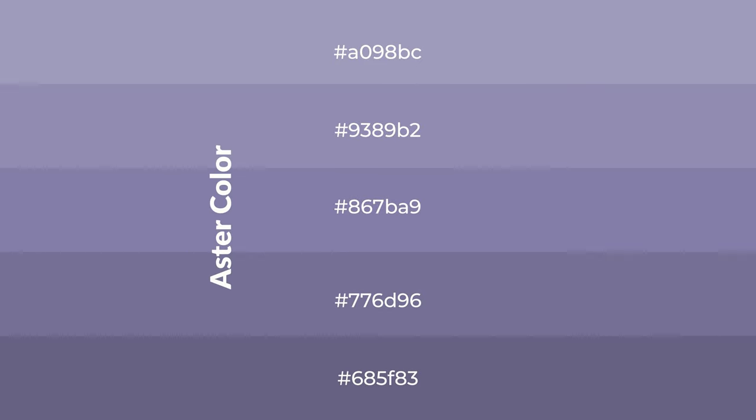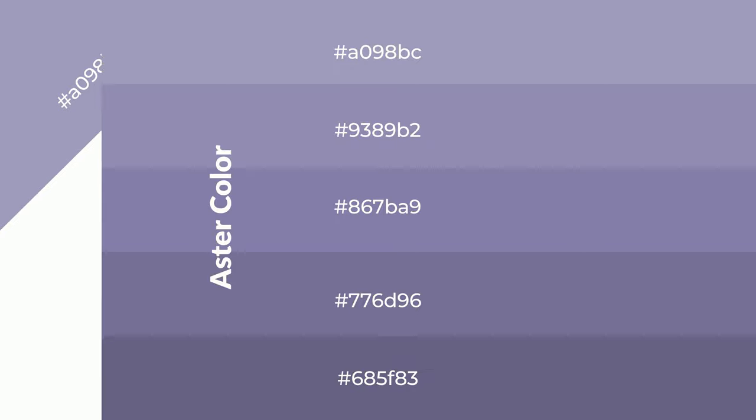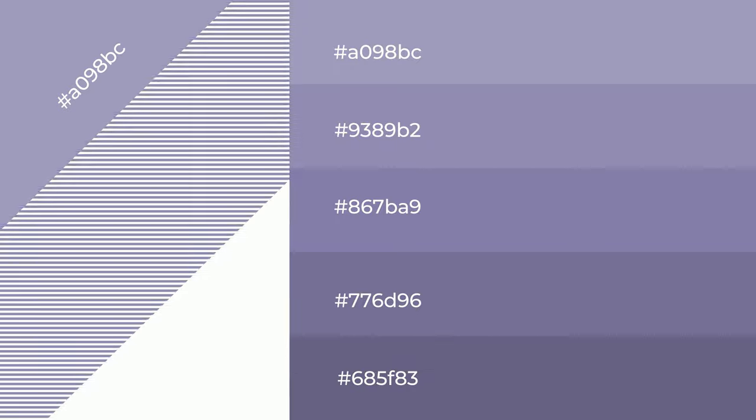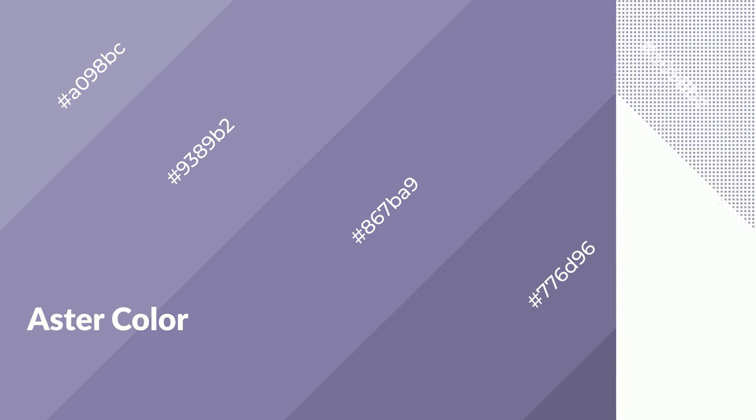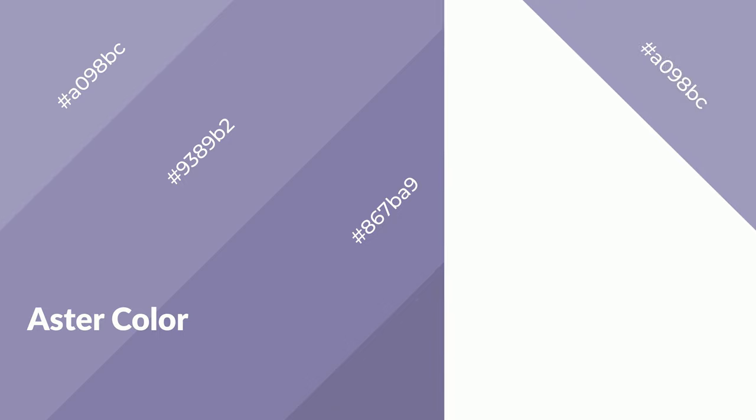To generate shades of a color, we add black to the color. Shades are used in patterns, 3D effects, and layers, and they create depth and drama. Aster is a cool color and it emits calming, serene, soothing, refreshing, spacious emotions.